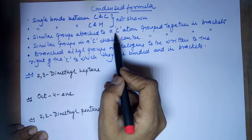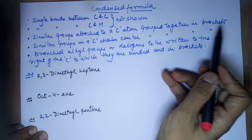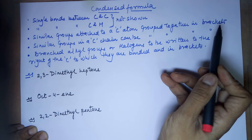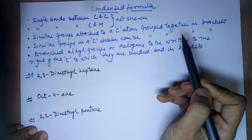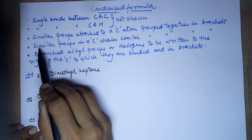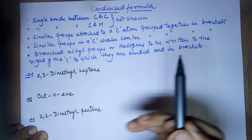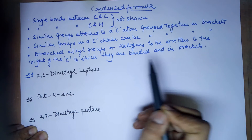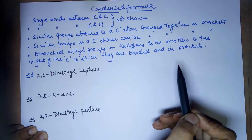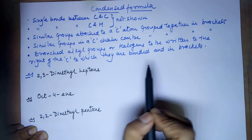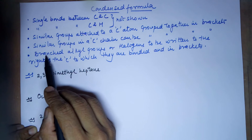So if it is two methyls, you will write a bracket CH3 whole twice, and that's it. If there are similar groups in a carbon chain — say you have a five-carbon chain — then in the center of the carbon chain you would have CH2, CH2, CH2, and at the terminals you would have CH3. So these three CH2s can be grouped together.